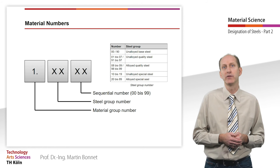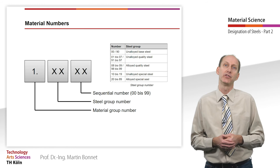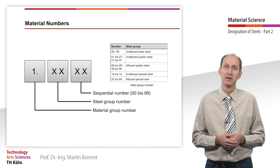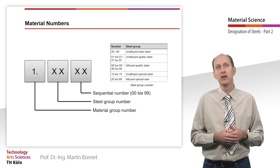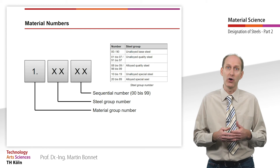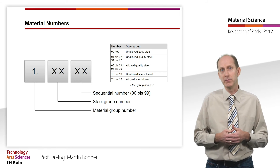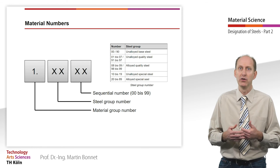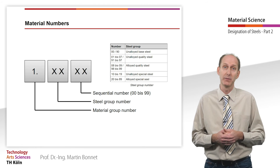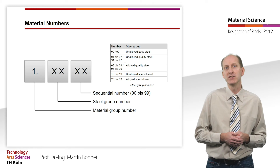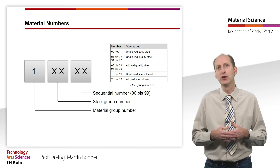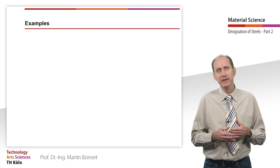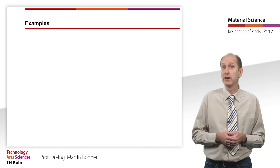Important information can be directly derived at least from the steel group number. A complete list of the steel group numbers with explanations can be found in DIN EN 10027. The standard further categorizes the unalloyed quality steels in strength classes and the alloyed special steels according to their main alloying elements or special properties. Since you need to look up these identification numbers at the end of the material number in tables anyway, and since no direct information can be inferred from the numbers, I won't go into them in detail here. The material number complements the other designation systems.